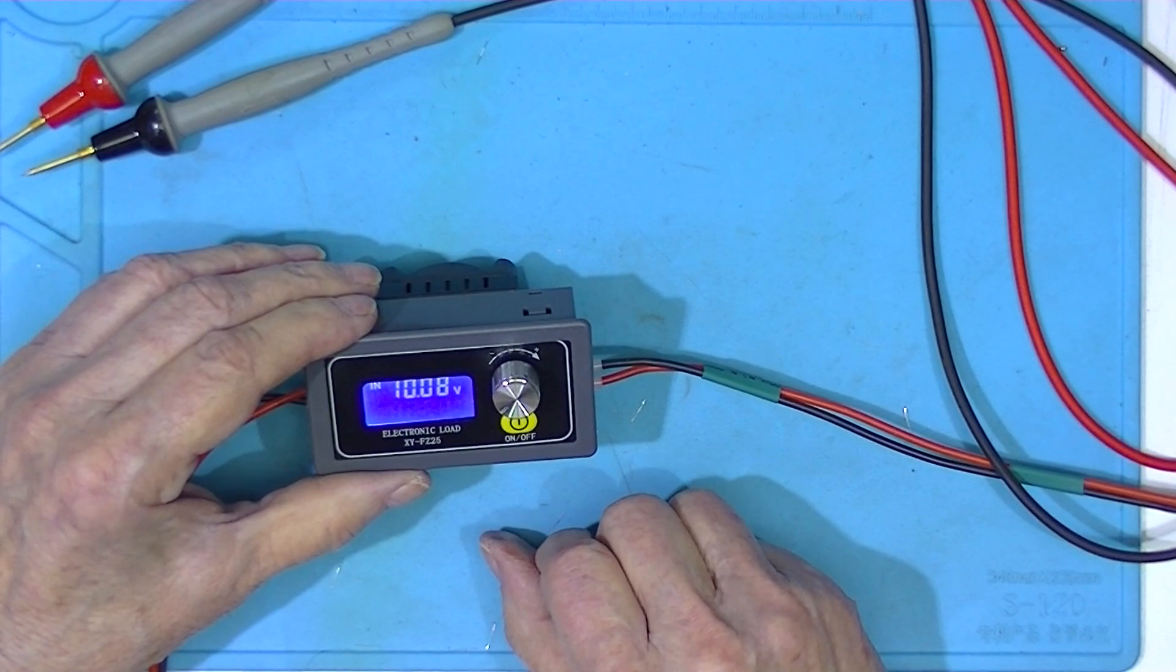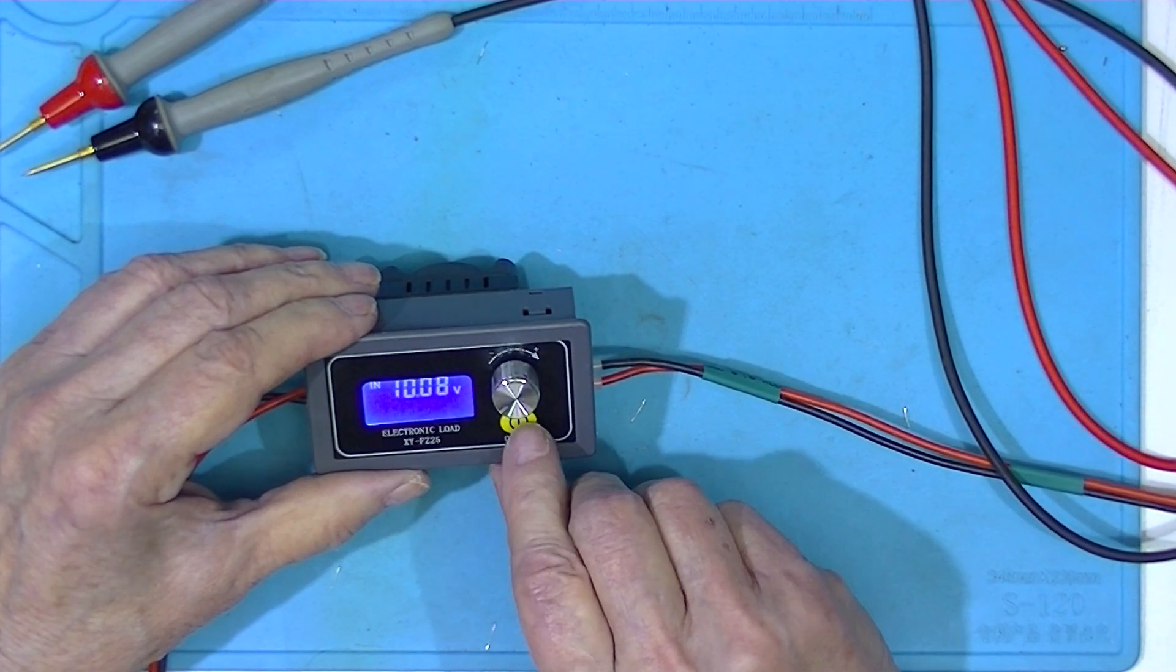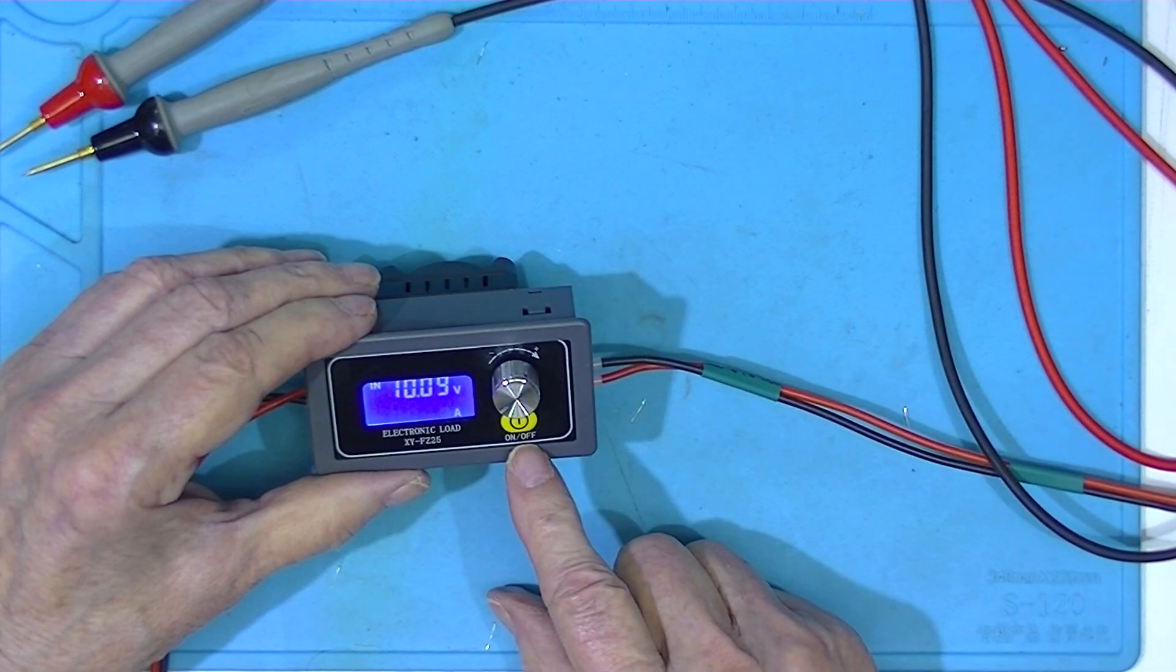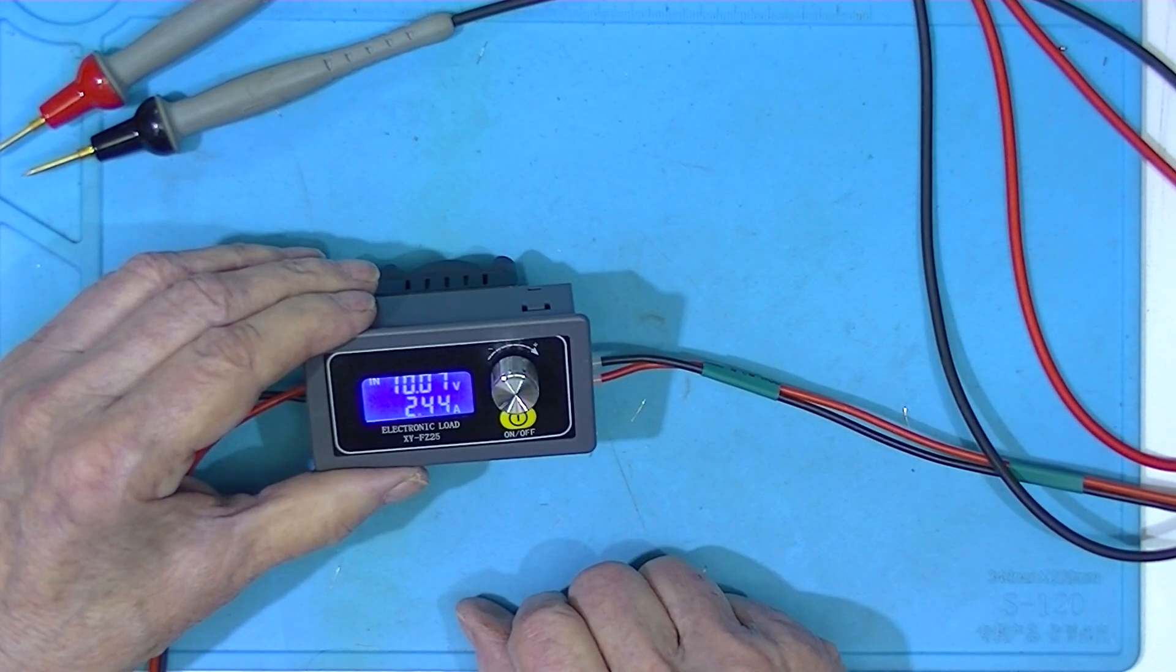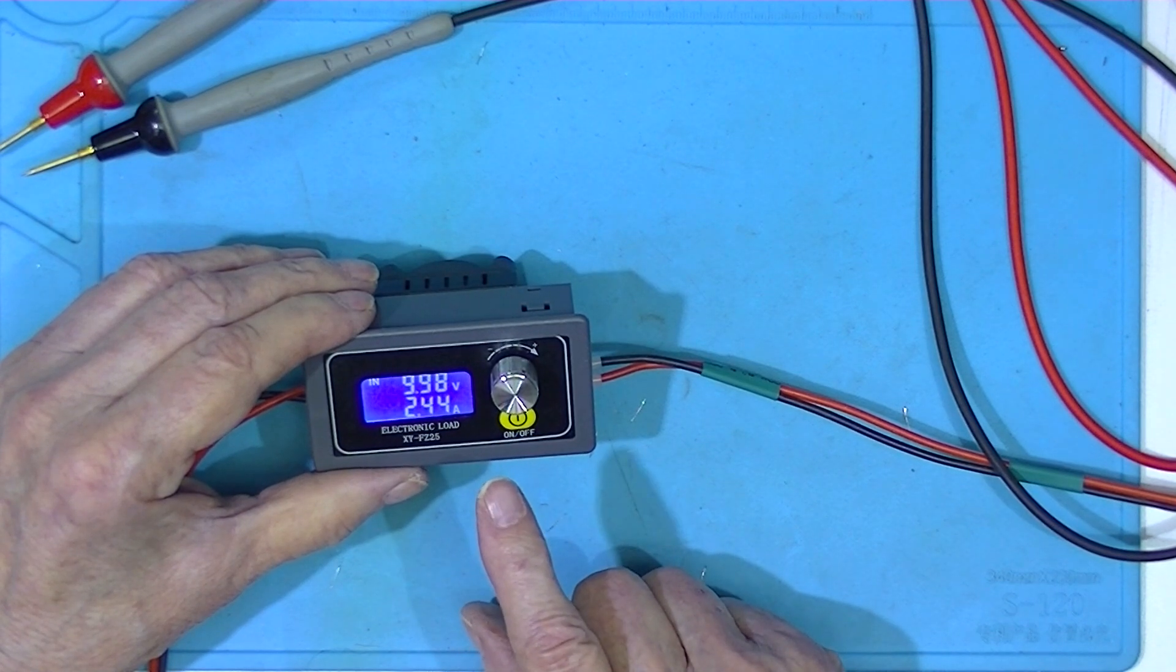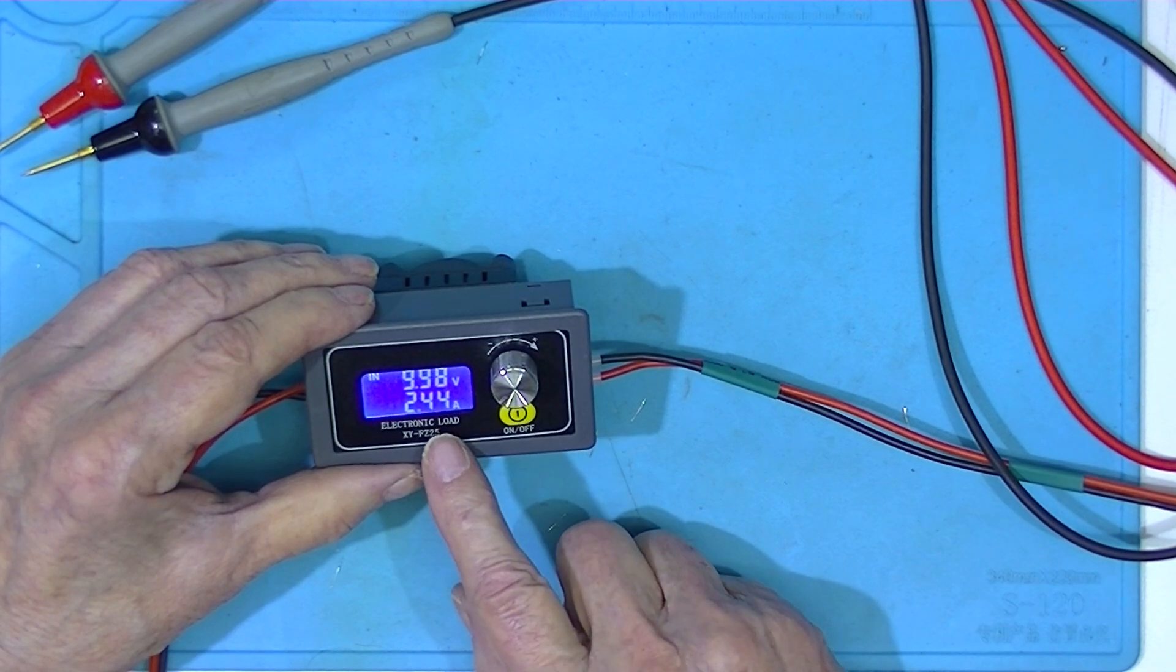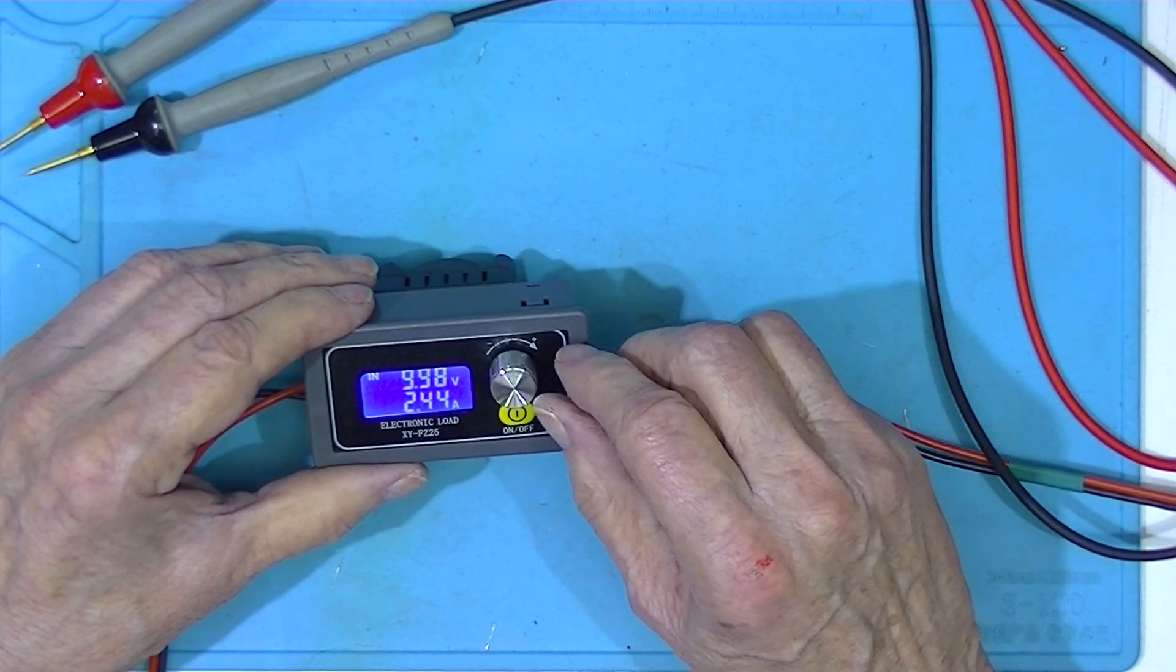Over power protection. Turn it off. That must have reset it. I'll bet when I get around 2.5 amps this thing shuts down.